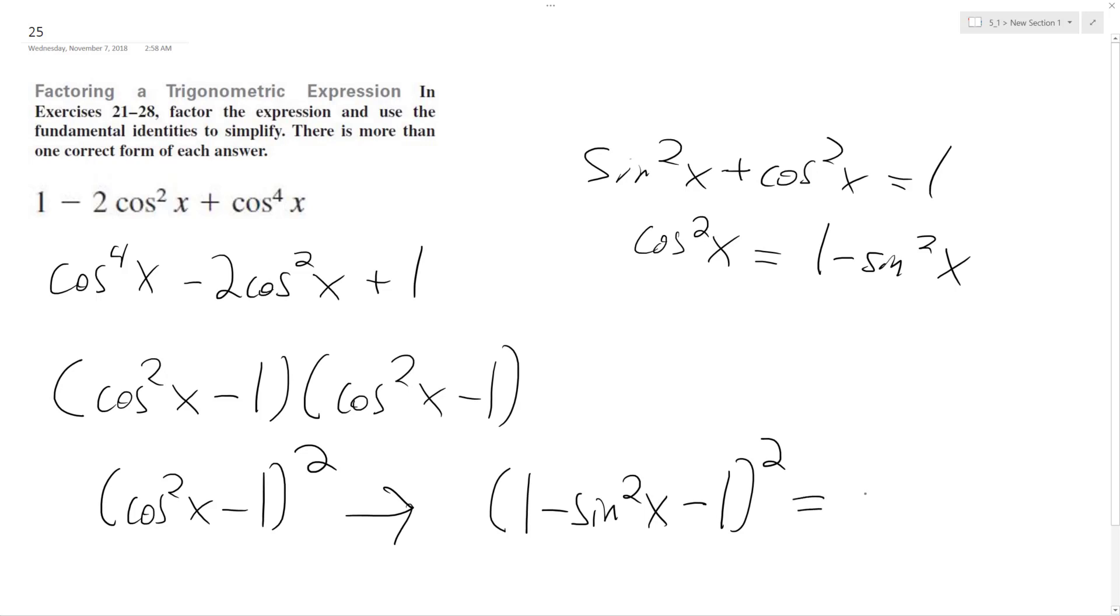And so the ones cancel out, and we're left with negative sine squared x squared. And this squared is simply equal to, it becomes a positive because of the square here, sine raised to the fourth x.